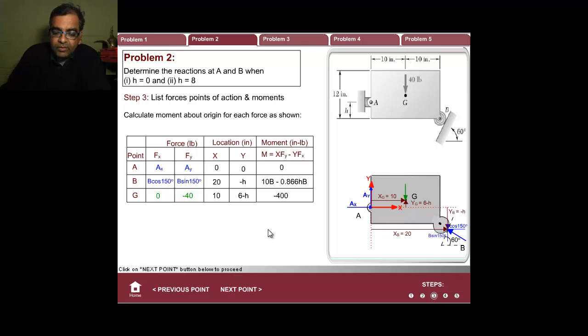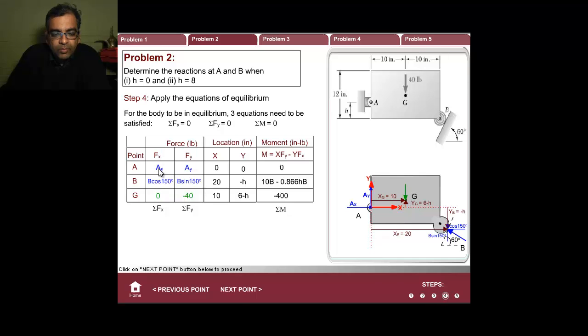What do you do? Pretty easy. We sum all the columns. I'm going to sum these three, set it equal to zero—because that's the net force in the x direction, net force in the y direction, net moment on the body. Sum this set it equal to zero, sum this set it equal to zero, sum this set it equal to zero. Let's see what we get.